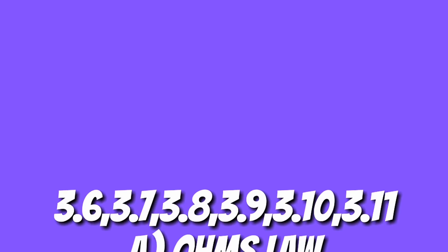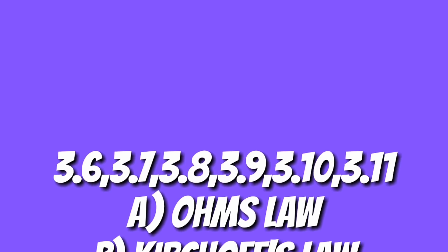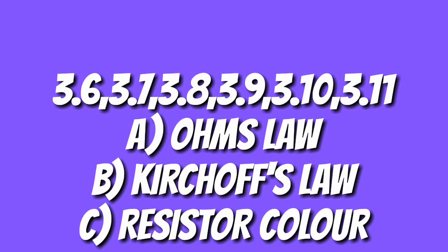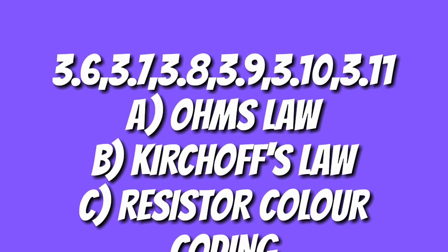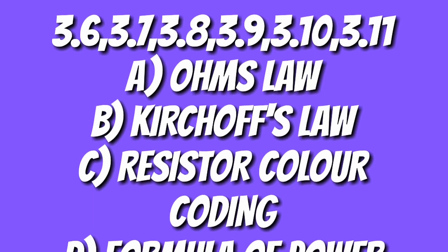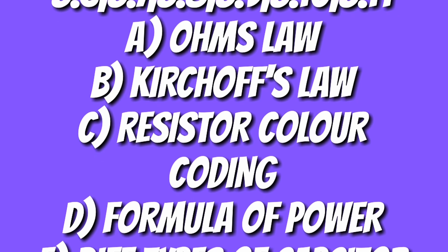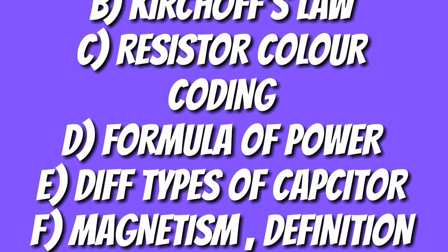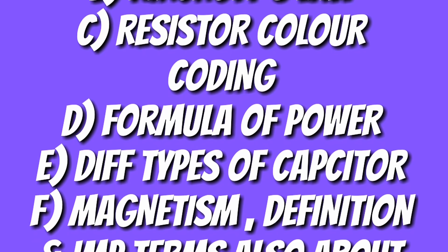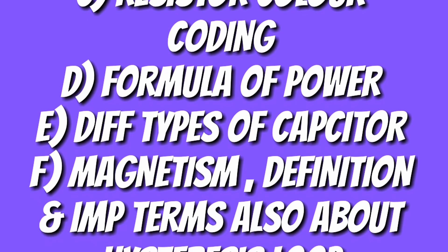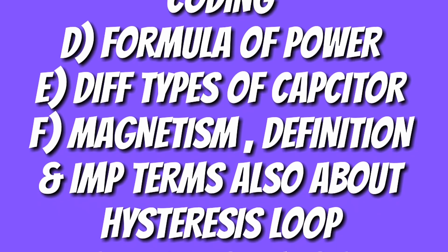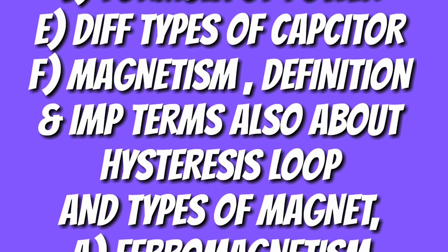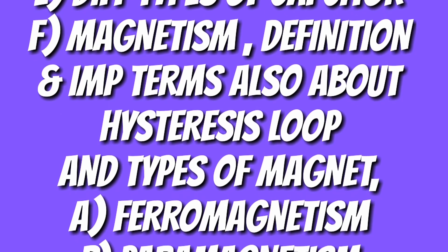Next, I have combined topics 3.6, 3.7, 3.8, 3.9, 3.10 and 3.11, which include the most important and interesting topics such as Ohm's law, Kirchhoff's law, resistor color coding, resistors connected in series and parallel, about Wheatstone Bridge, and the formula for power, which is really important. Remember the different types of capacitors, their uses and advantages, and also their connection in series and parallel.